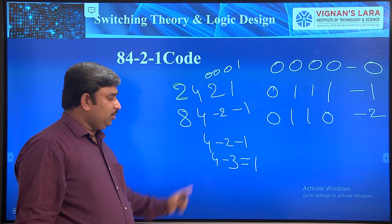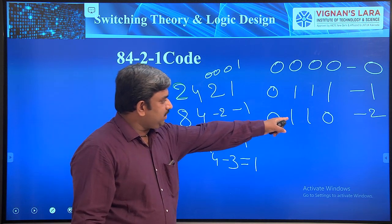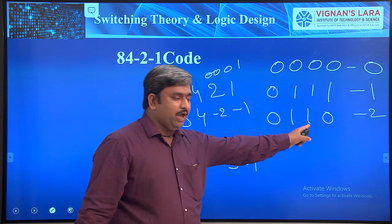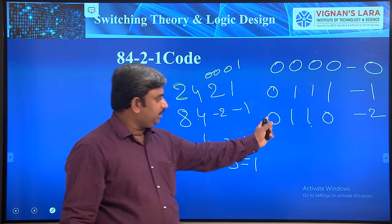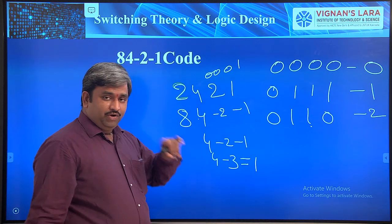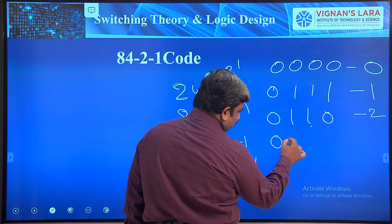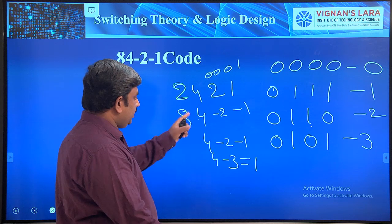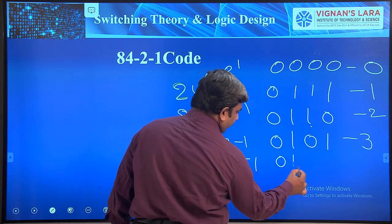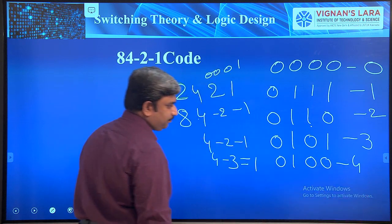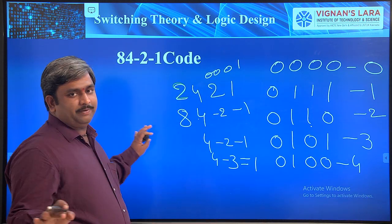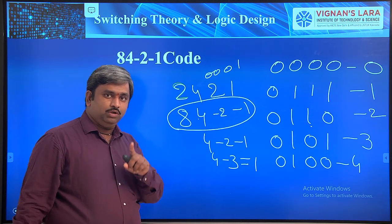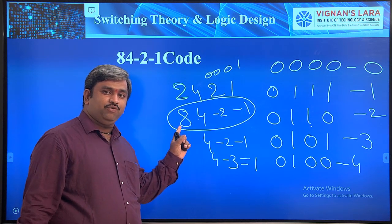For decimal 3: 4 minus 1 equals 3. Previously for 2 we wrote 0110 (4 minus 2). For 3 we keep 4 on and -1 on, giving 0101. For decimal 4: only the 4-bit is on, so the code is 0100.